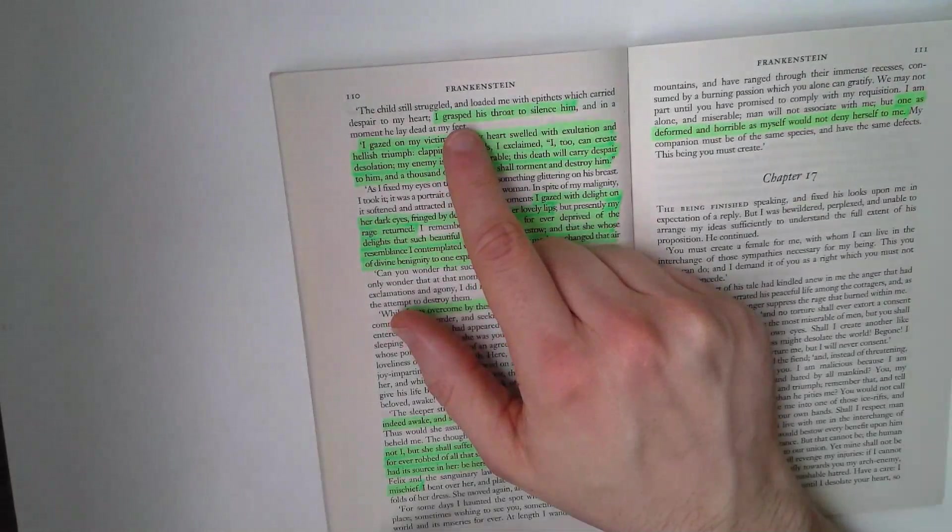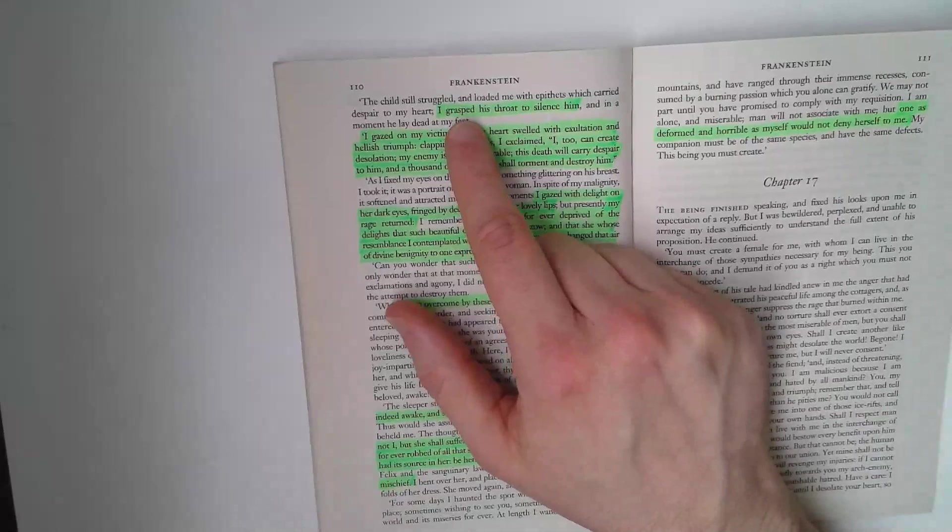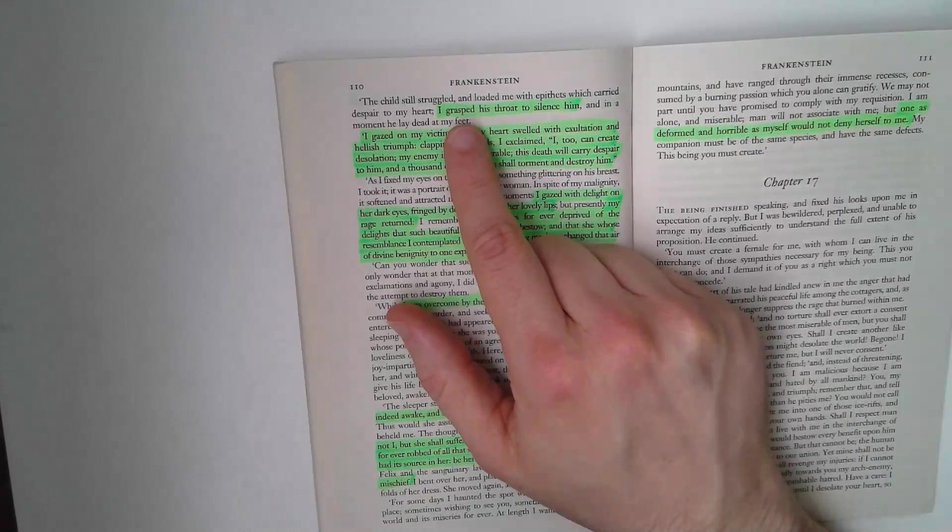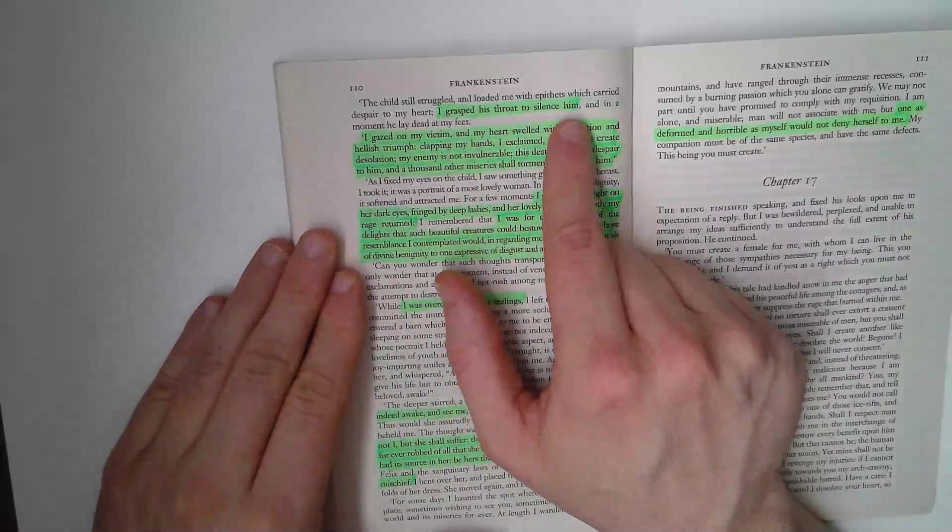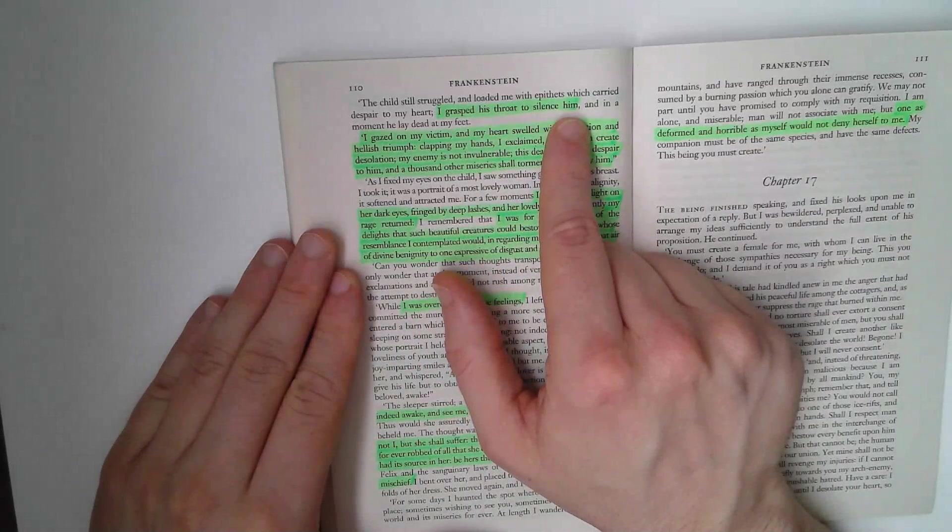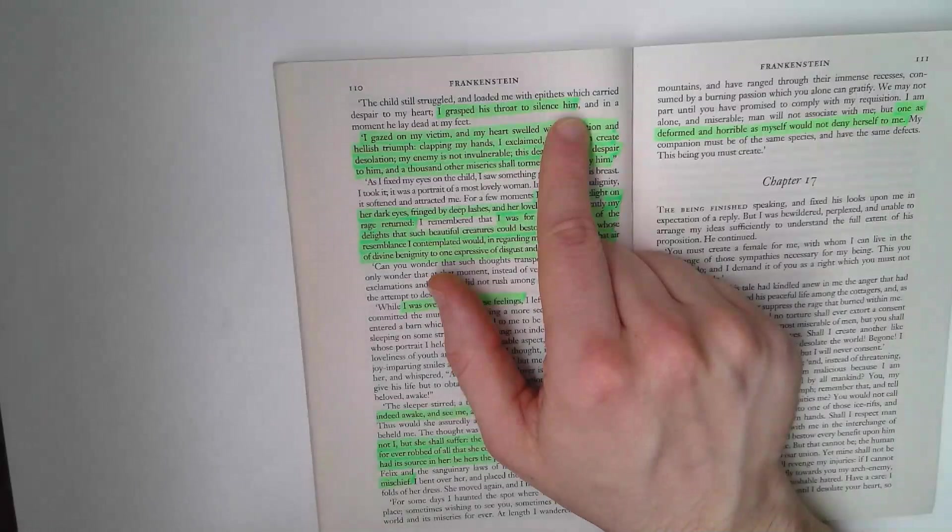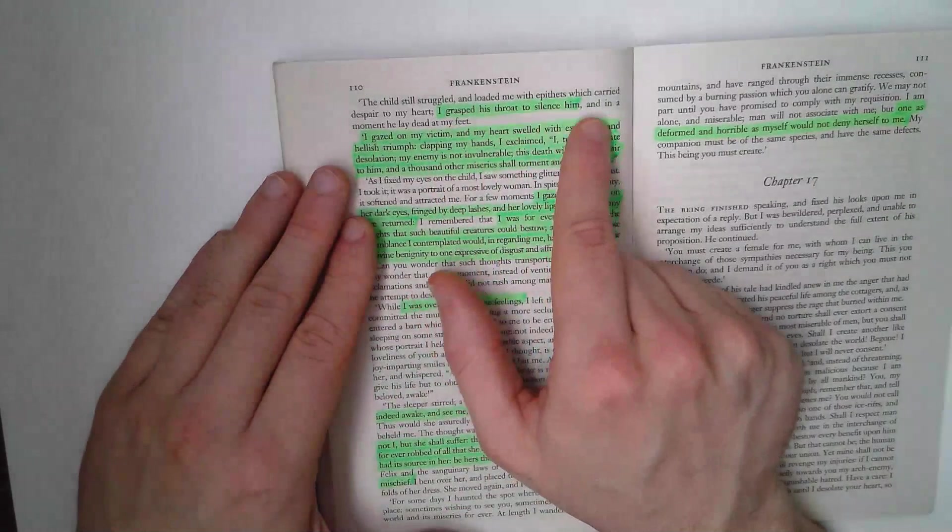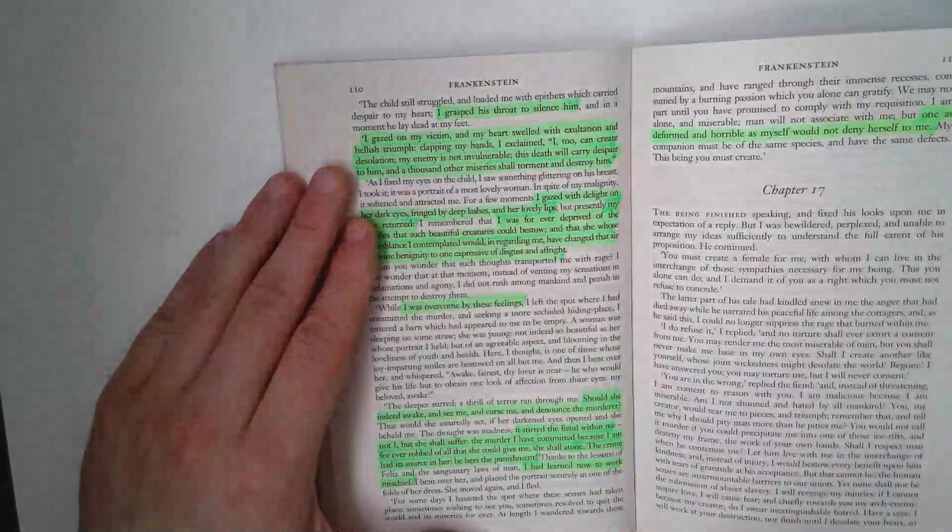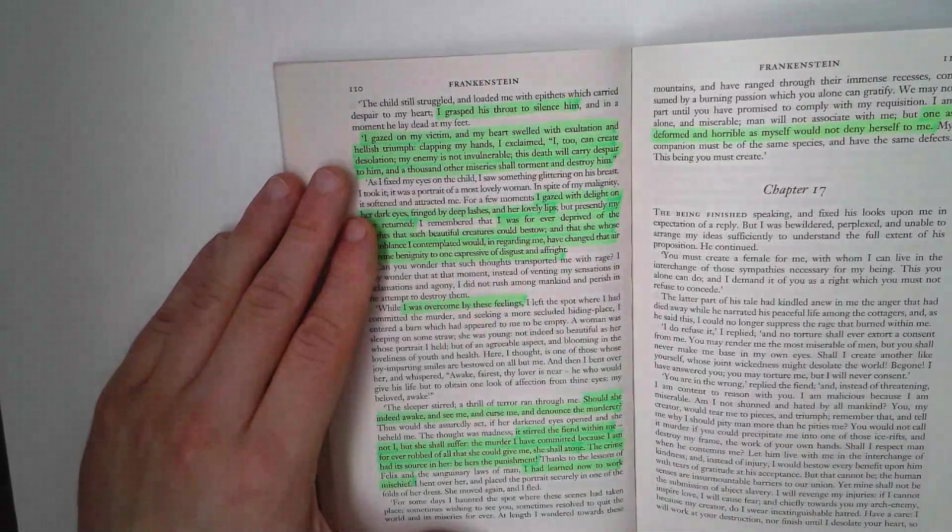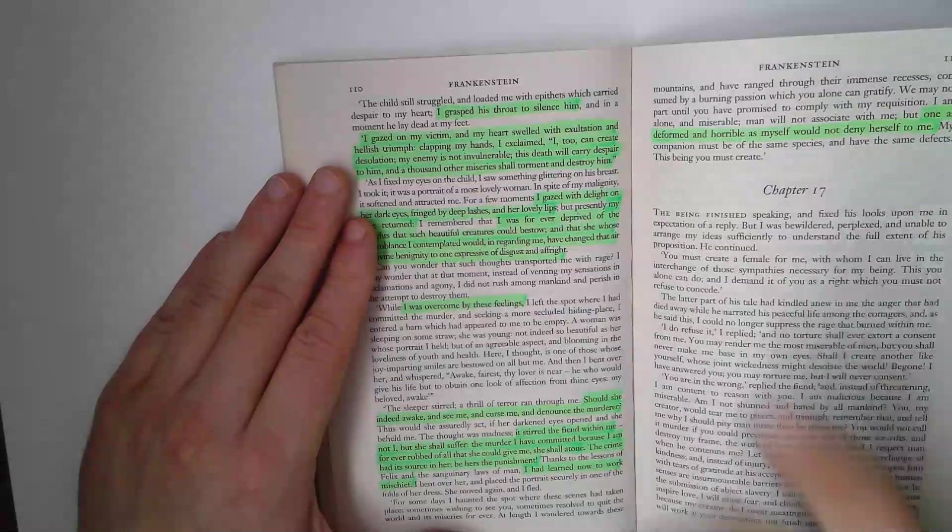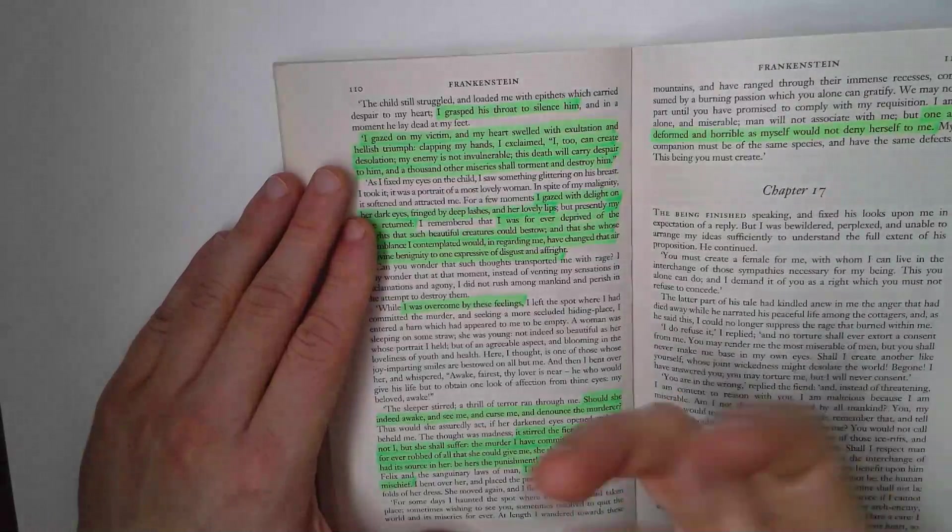He doesn't, the manner of murder that Shelley uses, grasped his throat to silence him, could well be the actions of a man who doesn't know his own strength trying to silence a child. Or it could just be, I killed him. Whatever you think about that, and it's interesting, is this kind of a trying to get someone to be quiet gone wrong, or an act of cold-blooded murder.